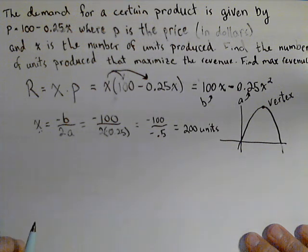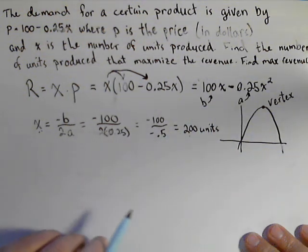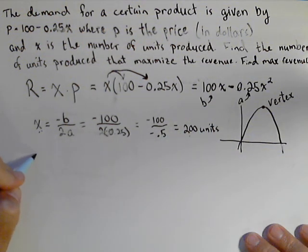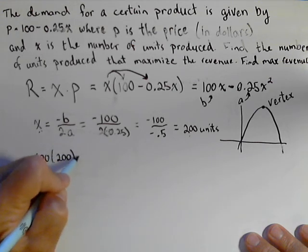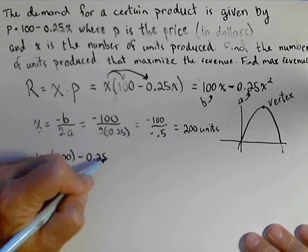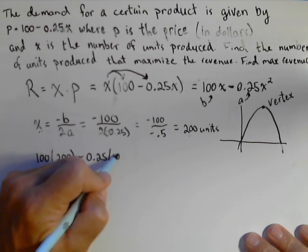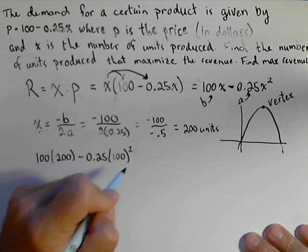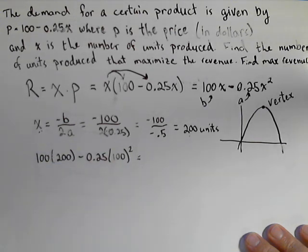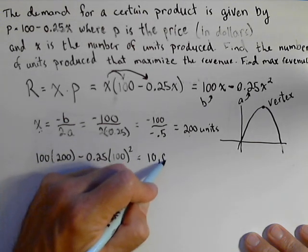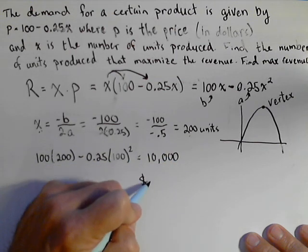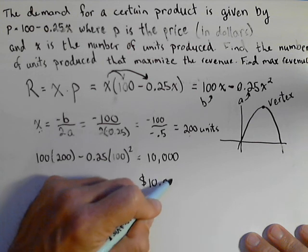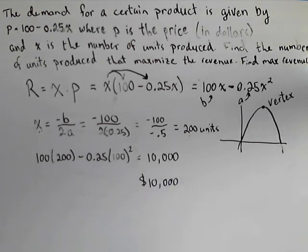Their maximum revenue comes from putting this 200 into our revenue function. So we'll have 100(200) - 0.25(200)², which, when we're done calculating, comes out to be 10,000. And now we are talking about the revenue, so the maximum revenue is $10,000 for this company with this given demand.